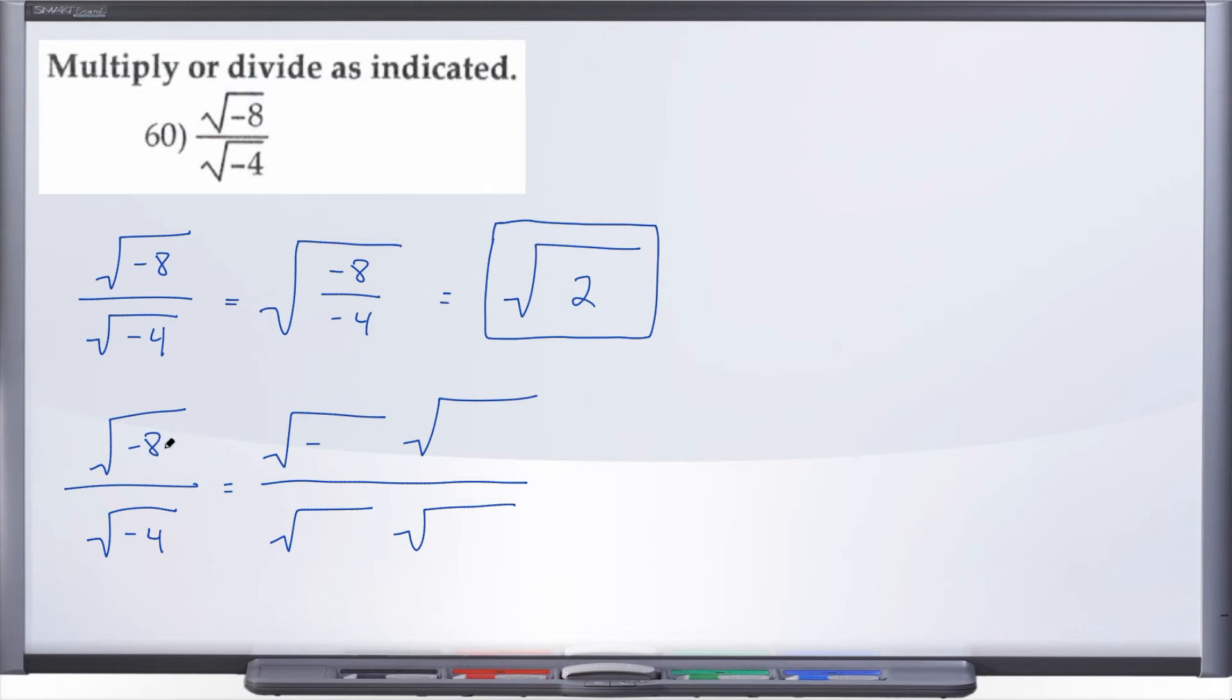And what is the largest perfect square that we can multiply by some other number to get to 8? Well if you said 4 and 2 then you've got it. So let's go ahead and make sure that we've got everything here. Negative 4 times 2 gives us negative 8, good to go.